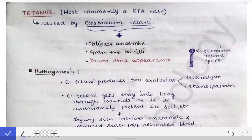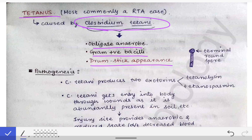Tetanus is caused by Clostridium tetani. There are some very important points about Clostridium tetani that one must remember: it is an obligate anaerobe, it is a gram-positive bacilli, and it has a drumstick appearance. Obligate anaerobic means it lives only in strict absence of oxygen — if there is any oxygen present, it cannot grow.